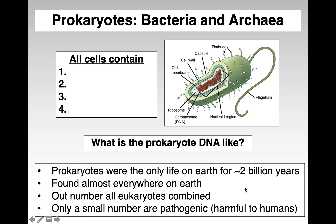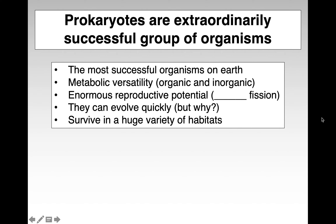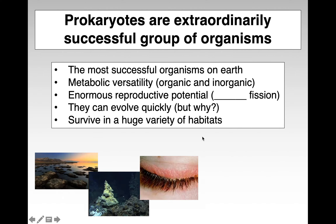Prokaryotes were the only life on earth for a very, very long time. They're found almost everywhere on earth and outnumber all eukaryotes combined. Only a very small number are pathogenic or harmful to humans, and those are the ones often popularized in the news. Prokaryotes are an extraordinarily successful group of organisms — the most successful on earth. They have huge metabolic versatility, can use organic and inorganic molecules to get energy, have a huge reproductive potential through binary fission, evolve very quickly because of that fast reproductive time, and survive in a huge number of habitats.